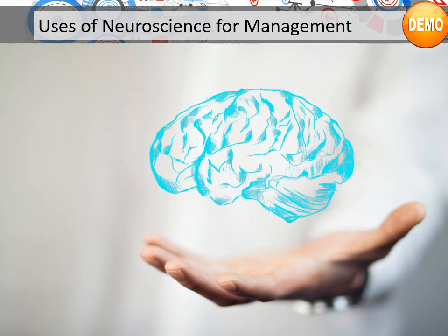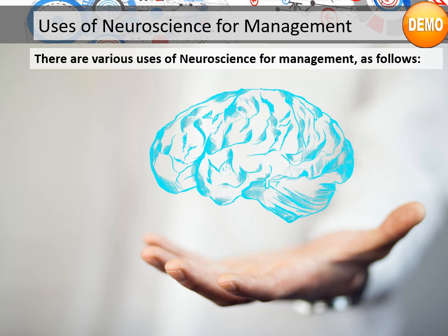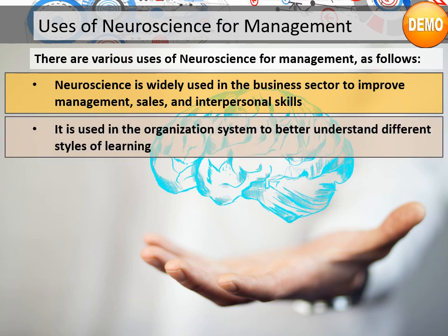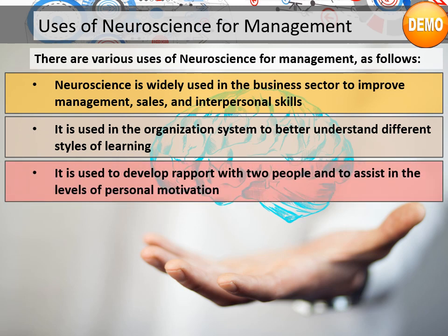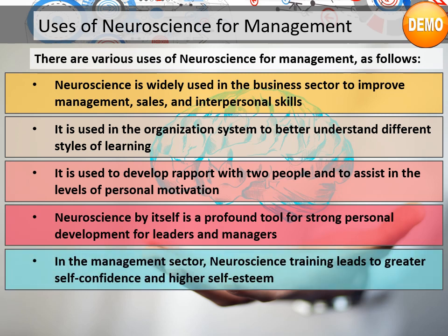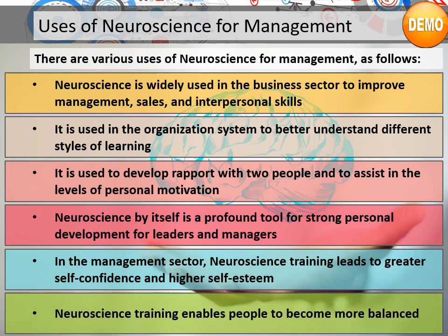Uses of neuroscience for management: there are various uses, such as the following. It's widely used in the business sector to improve management, sales, and interpersonal skills. It's used in organizations to better understand different styles of learning. It's used to develop rapport between people and to assist in the levels of personal motivation. Neuroscience is a profound tool for strong personal development for leaders and managers. In the management sector, neuroscience training leads to greater self-confidence and higher self-esteem, and enables people to become more balanced.